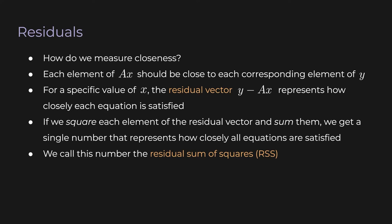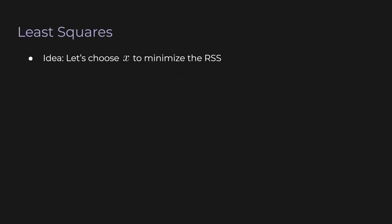So the RSS is like one number that just gives a summary of how closely we're satisfying the vector equation. So here's another idea. Let's choose x to minimize the RSS. And this is what least squares is all about. We're minimizing the sum of squares.